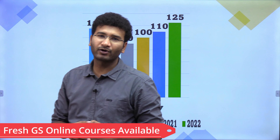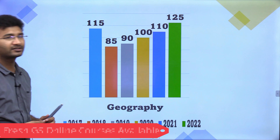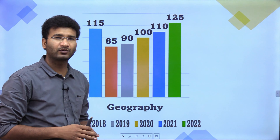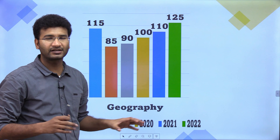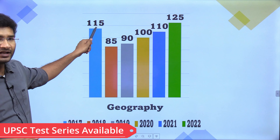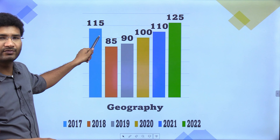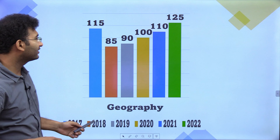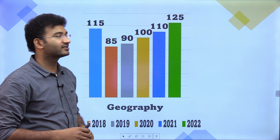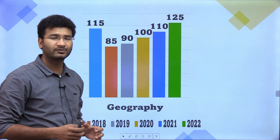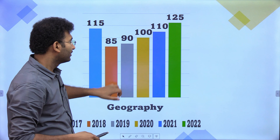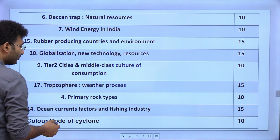From 2017, the number of questions and the weightage — on an average there will be around 6 to 7 questions asked with 10 markers and 15 markers. From 2017 onwards, on an average there are around 100 marks asked from this paper. But this year the weightage has increased to around 125 marks from geography in Paper 1.